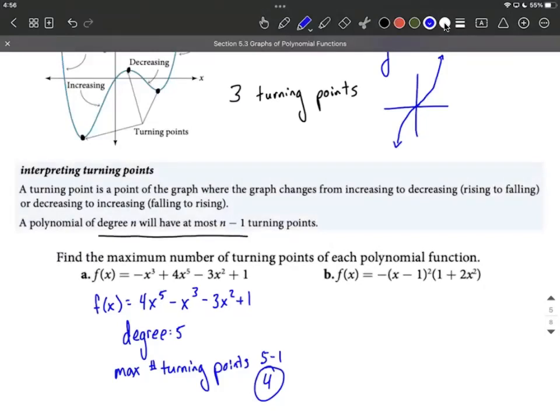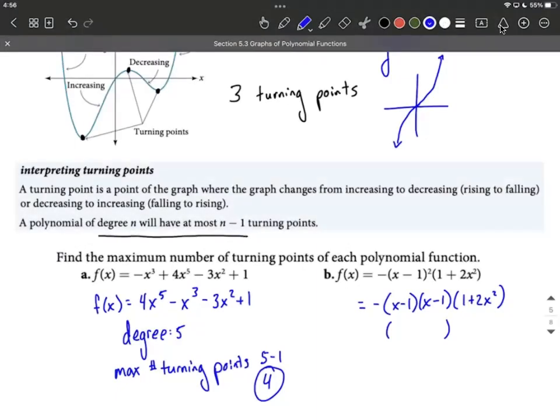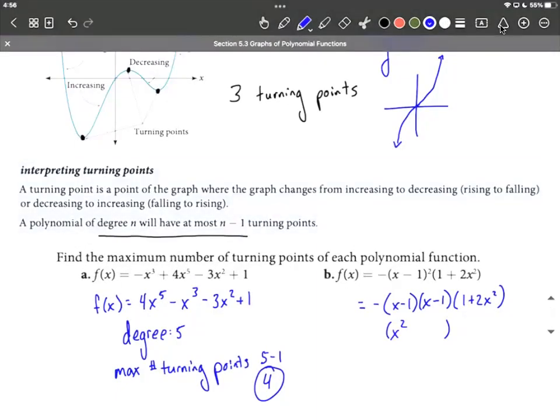On part b, that's not in expanded form. So we have to kind of visualize if we were to multiply this all out. We can think of this as negative of (x - 1) times another copy of (x - 1) times (1 + 2x^2). Now we're concerned about getting the highest power of x possible. If we multiply those first two binomials, (x - 1) times (x - 1), we'd get x times x gives us x^2. I'm discounting the negative out in front for now because that doesn't contribute to the degree.